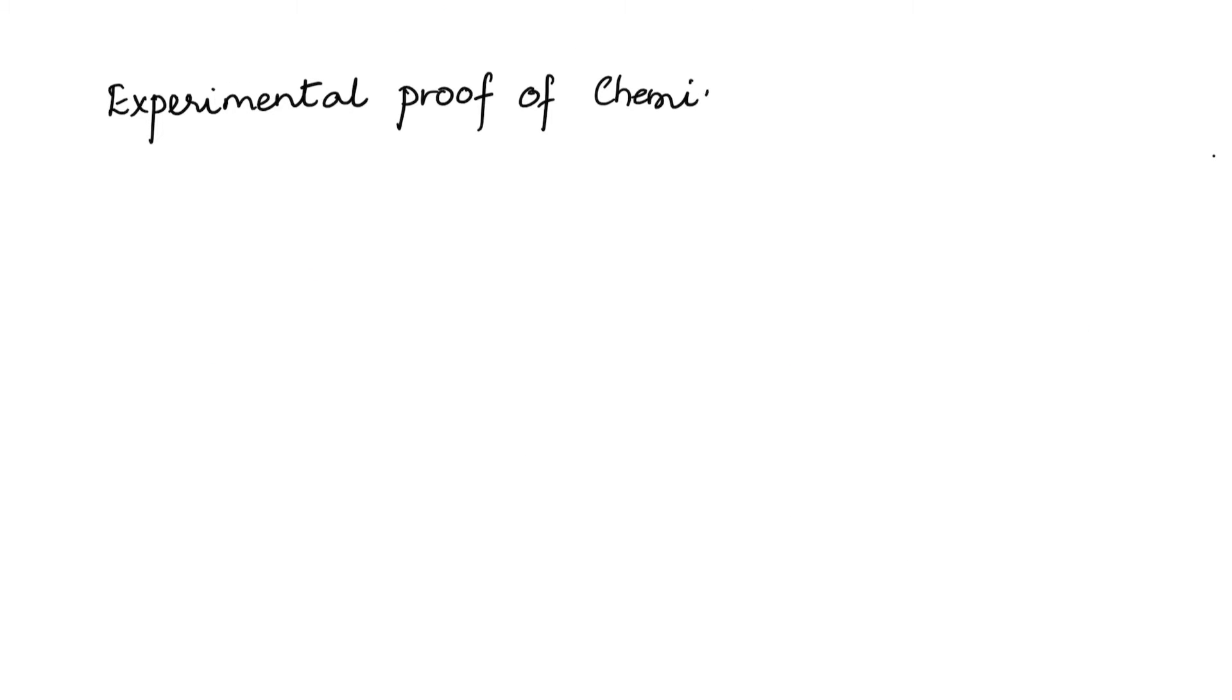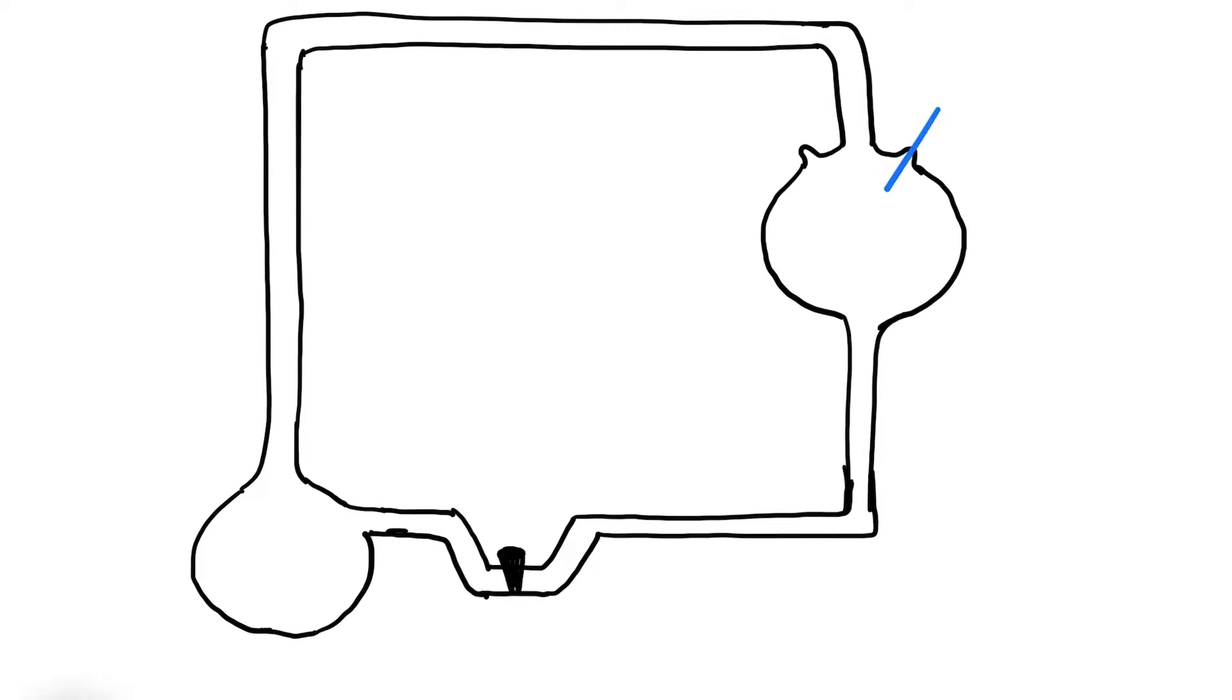Experimental proof of the chemical evolution of life was given by Stanley Miller. In 1953, Stanley Miller, an American scientist, created a setup that mimicked the conditions of primitive Earth.